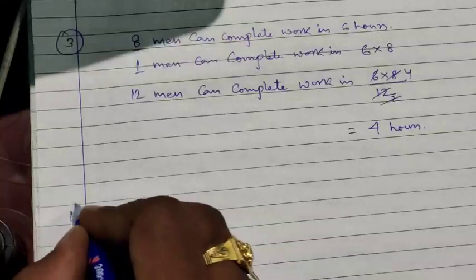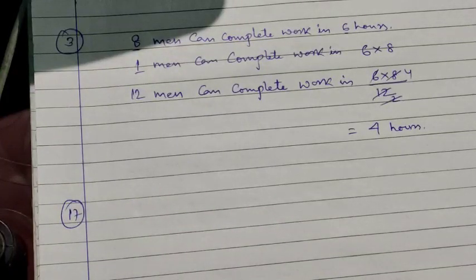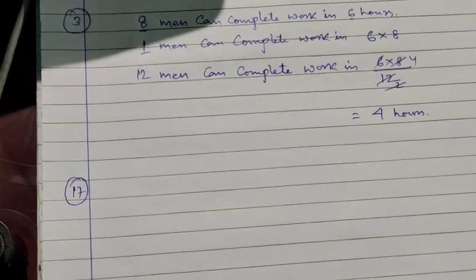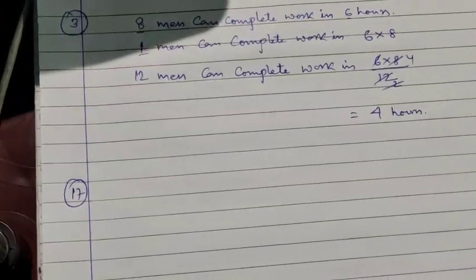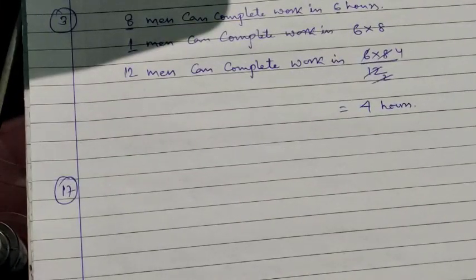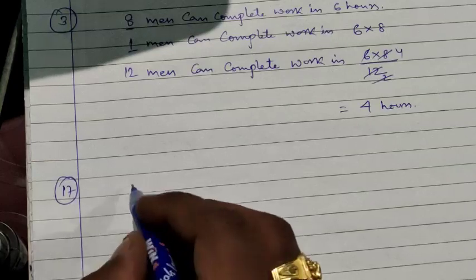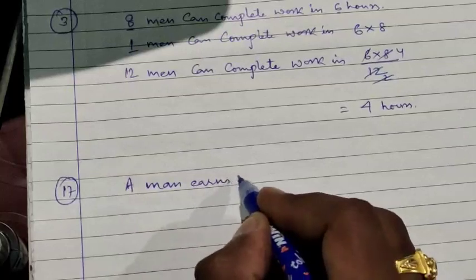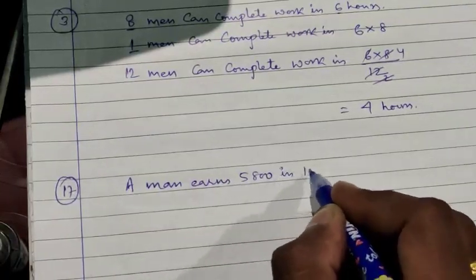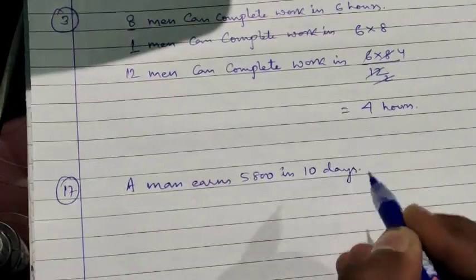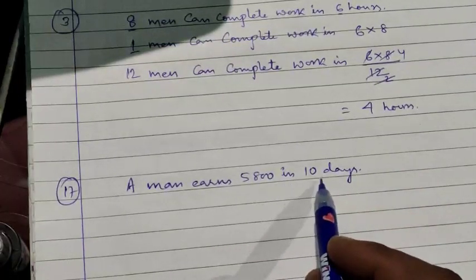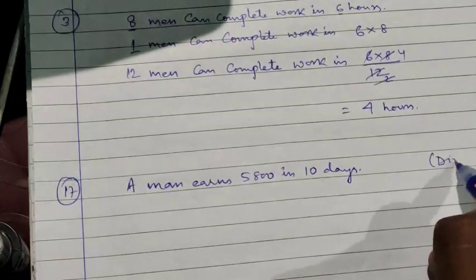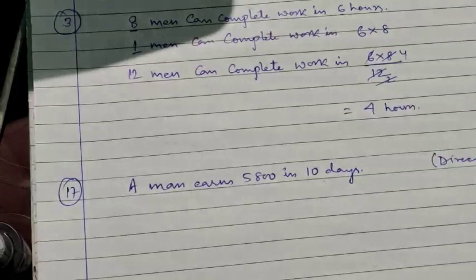Let us look at question number 17, which I have picked randomly. Question number 17 says: a man earns rupees 5800 in 10 days. If a person works for more days, he will earn more — so this question is in direct variation.